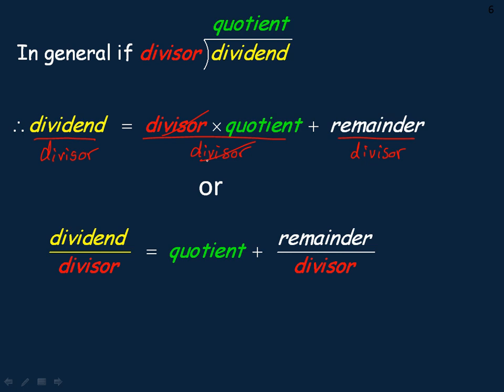They divide out here, and then you get the other division statement. Dividend divided by divisor equals the quotient plus the remainder over the divisor. That's where that remainder over divisor part comes from.